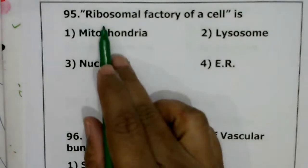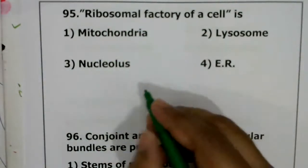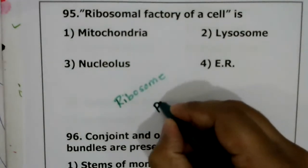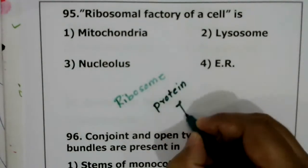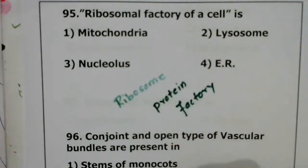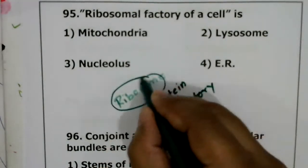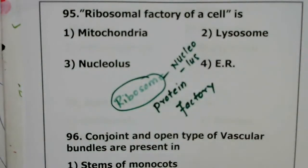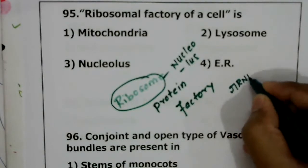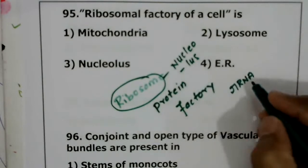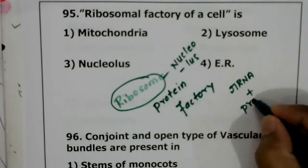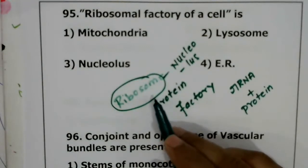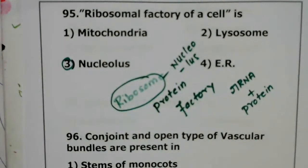Question 95: ribosomal factory of a cell. We know that ribosomes are called the protein factory since they are involved in protein synthesis. However, ribosomes are mainly produced by the nucleolus. The nucleolus mainly produces rRNA, and this rRNA plus 80 different types of proteins together form ribosomes. So the ribosomal factory is the nucleolus.